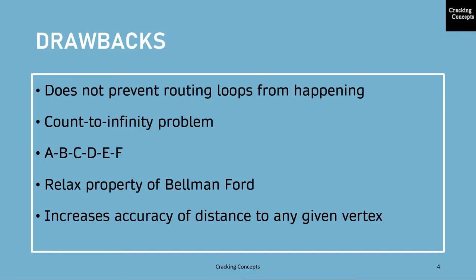To see the problem clearly, imagine a subnet that is connected as A-B-C-D-E-F and let the metric between the routers be the number of hops. Now suppose that A goes down.